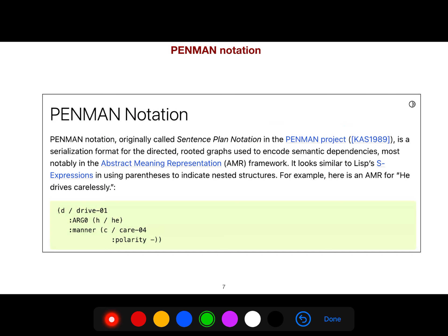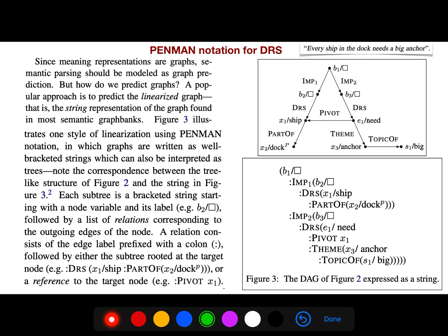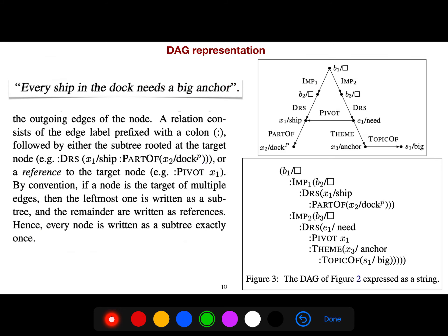They use Penman notation. We can use this Penman notation for AMR graph. Here you see there is a DAG, directly acyclic, there is no cycle. The Penman formulation is the format of that. Here is another example that shows how this creates a DAG, direct acyclic graph.